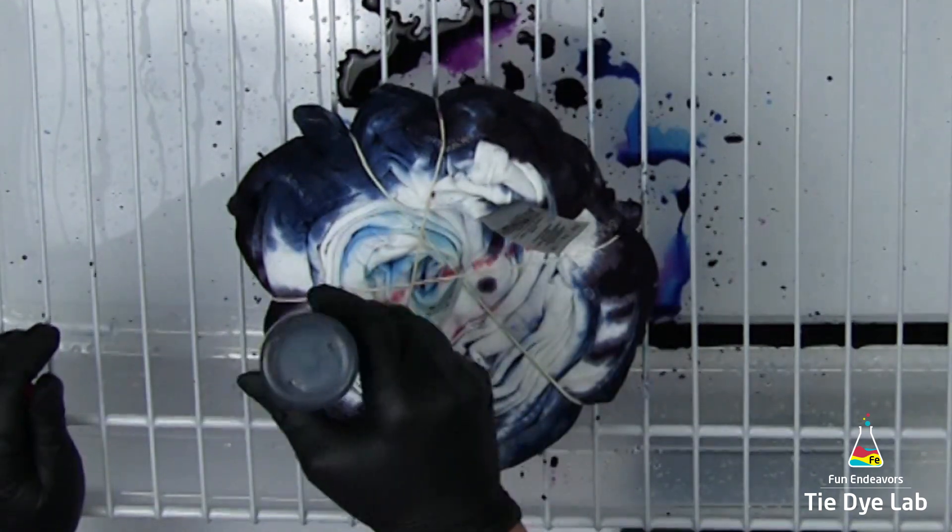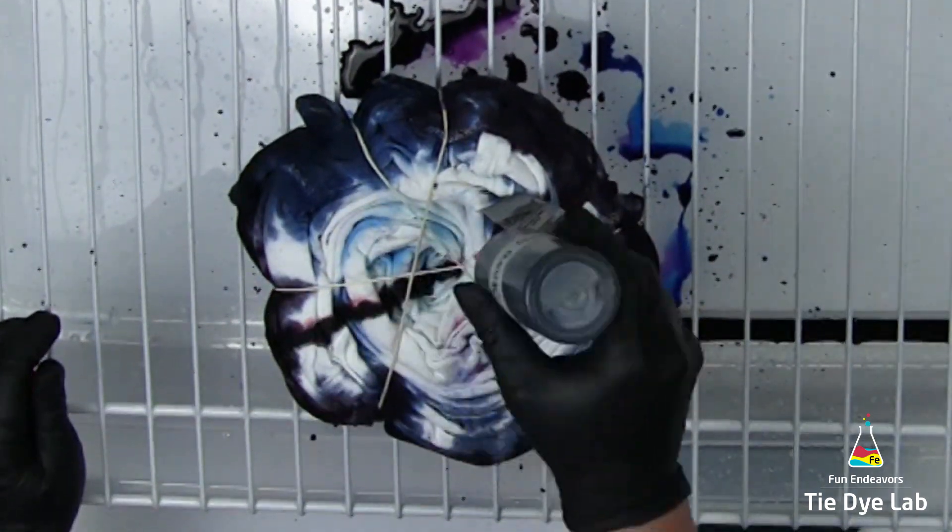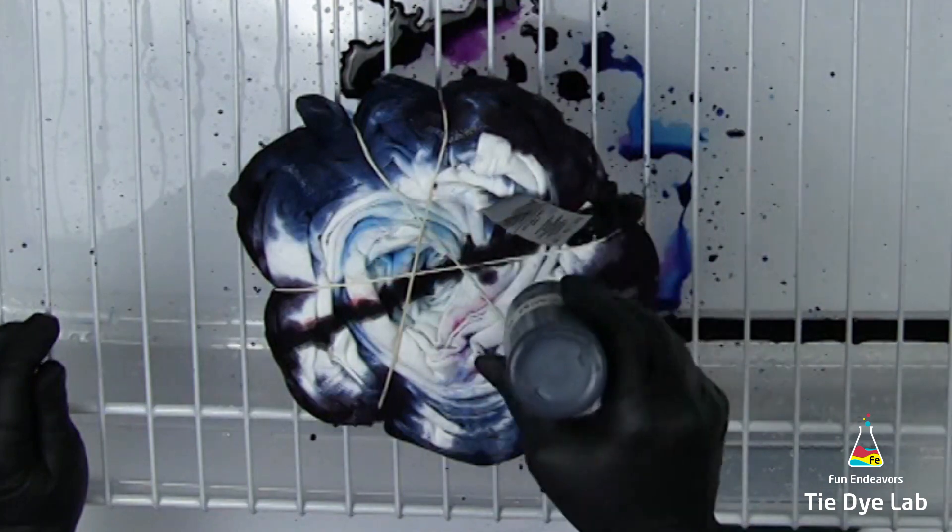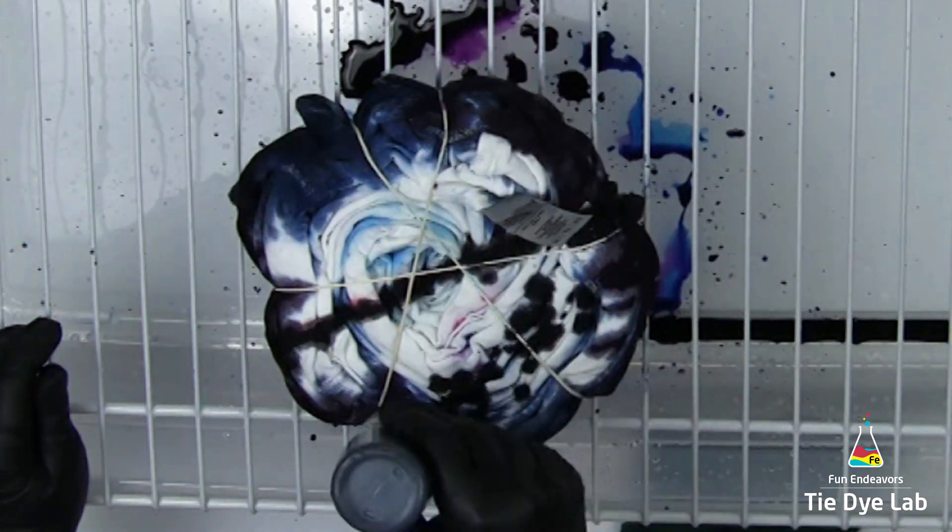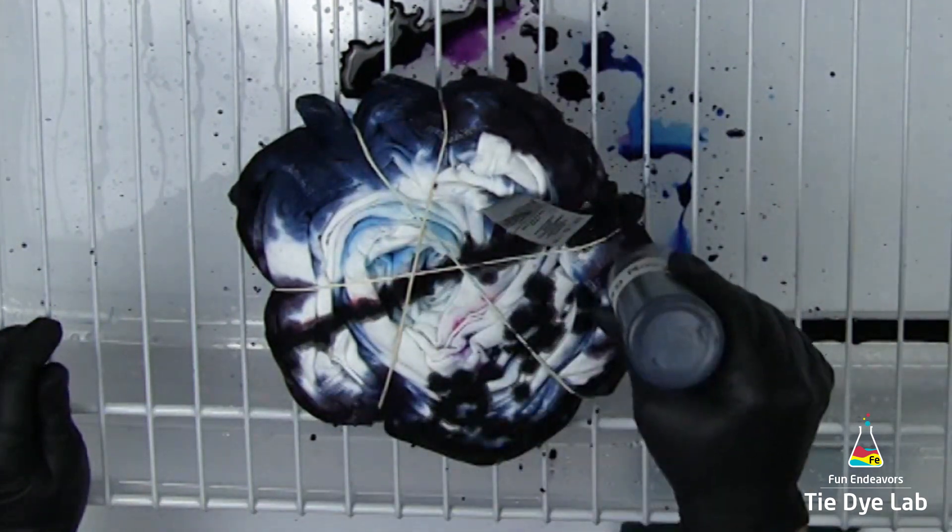I'm beginning with Strong Navy and I'm covering all of the white area that I have left, but I don't want to oversaturate because I don't want it to go through to the front side and overtake all the colors that I put on the front.